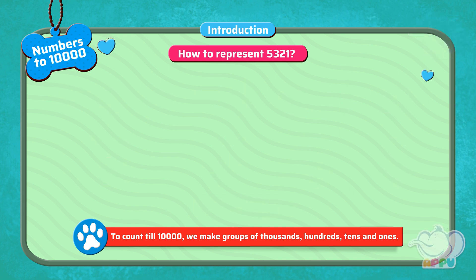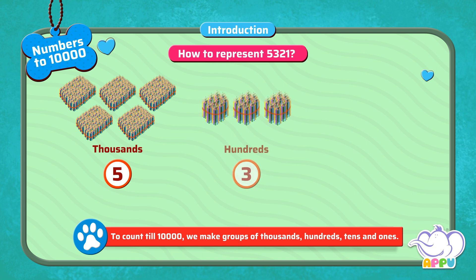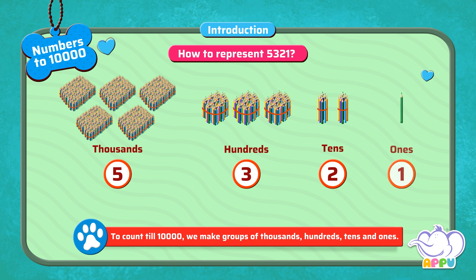Let's see one more example for the number 5,321. For this, we have five groups of 1,000 pencils, three groups of 100 pencils, two groups of tens, and one pencil. We have five thousands, three hundreds, two tens, and one ones.